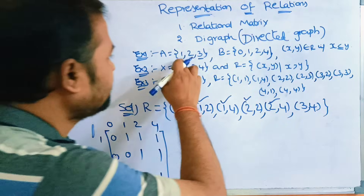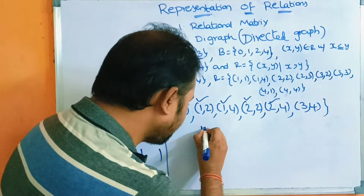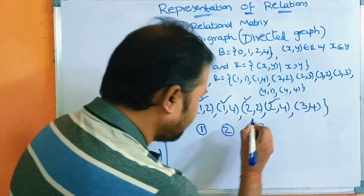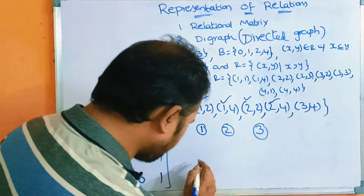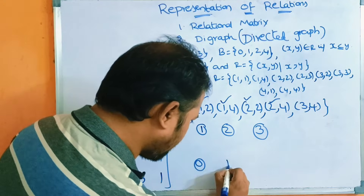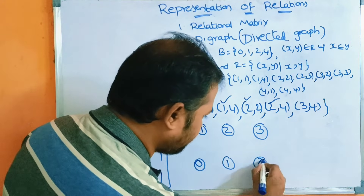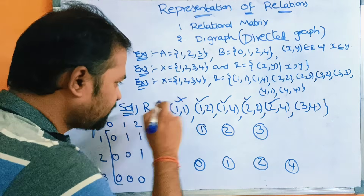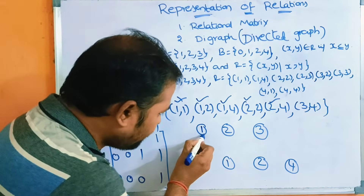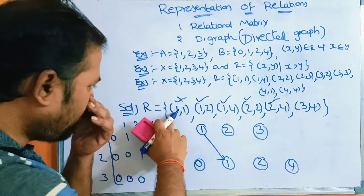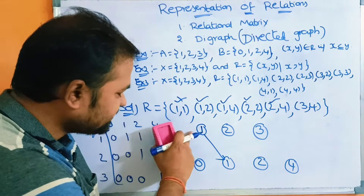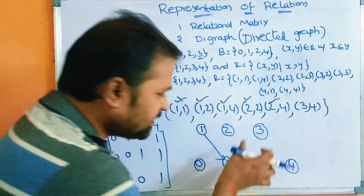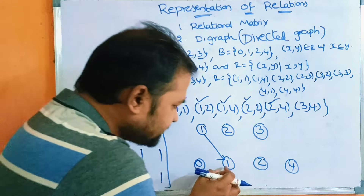Next we construct the digraph. The elements 1, 2, 3 from the first set and 0, 1, 2, 4 from the second set are all vertices of the graph. We then construct edges from the ordered pairs. For (1,1), there is an edge from vertex 1 in set A to vertex 1 in set B. For (1,2), there is an edge from the 1 of set A to the 2 of set B — these sets are kept distinct.